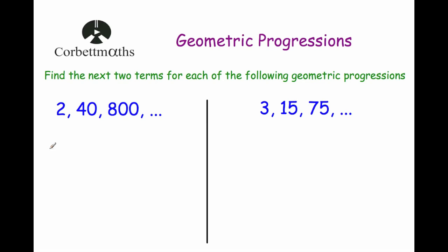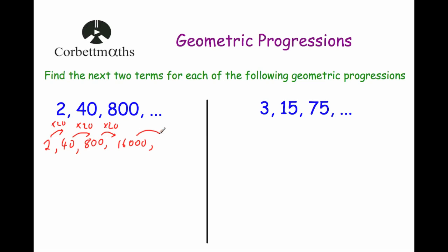Now we have the terms 2, 40, 800. To find what we are multiplying by each time, divide 40 by 2, which is 20. So in this geometric progression we are multiplying by 20 each time — and 40 times 20 is 800, which confirms it. Multiplying 800 by 20 gives 16,000, and multiplying 16,000 by 20 gives 320,000. Those are the next two terms in that geometric progression.